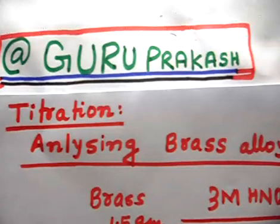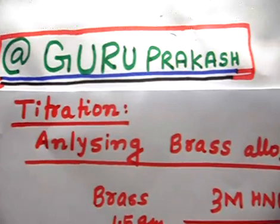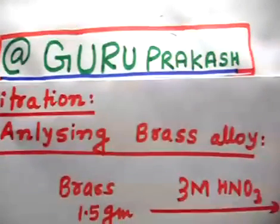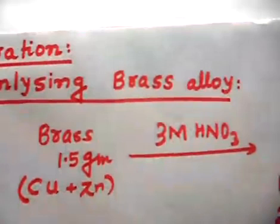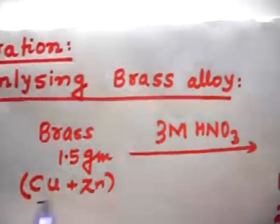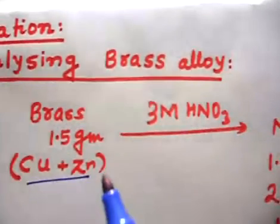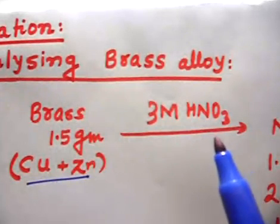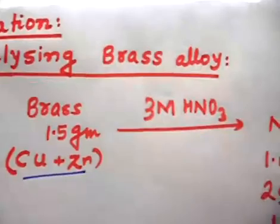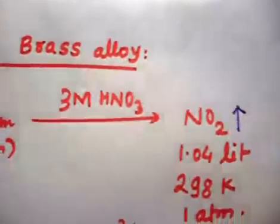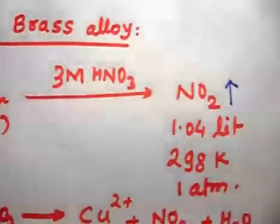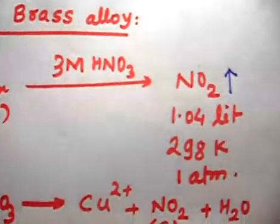This question is related to analyzing a brass alloy. We have 1.5 grams of brass alloy containing copper and zinc only. The alloy is dissolved in 3M HNO3 solution, which is a concentrated HNO3. This gives NO2 gas, and the volume of gas liberated is 1.04 liters at 290 Kelvin and 1 atmospheric pressure.